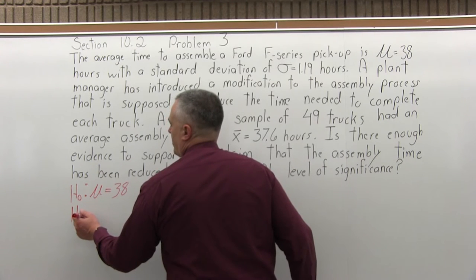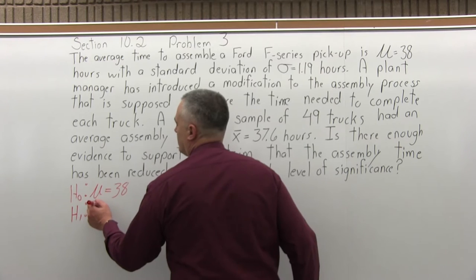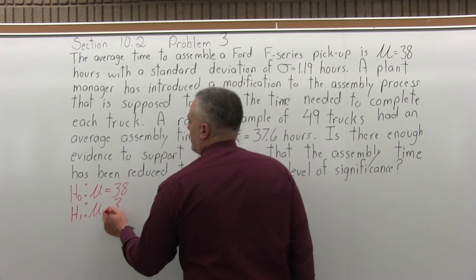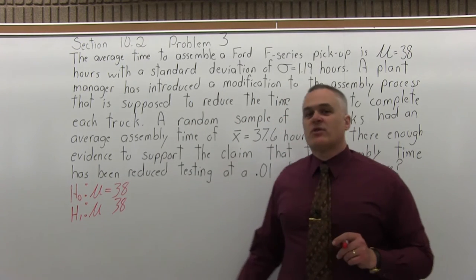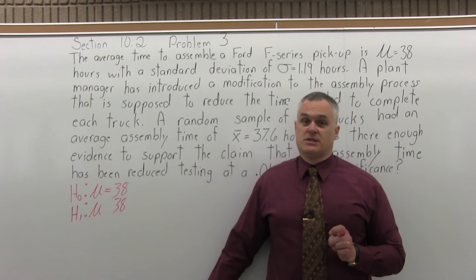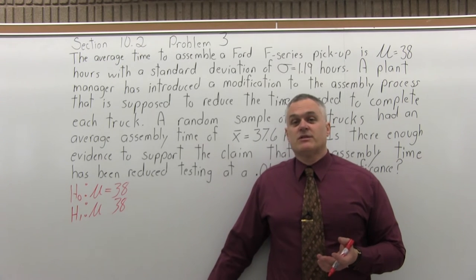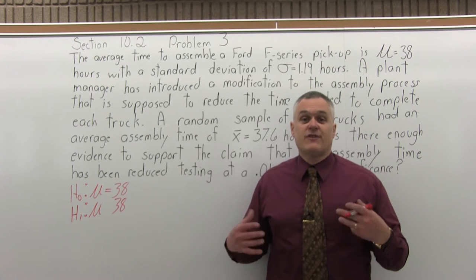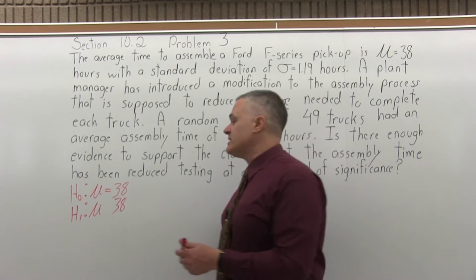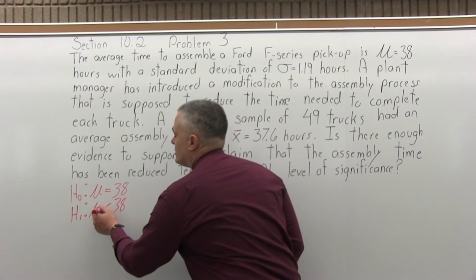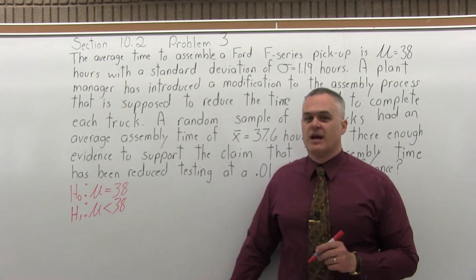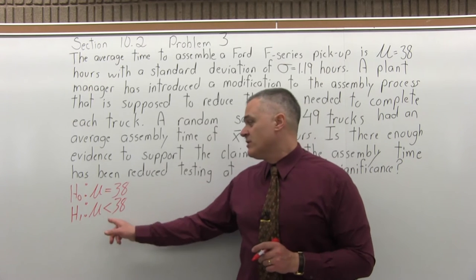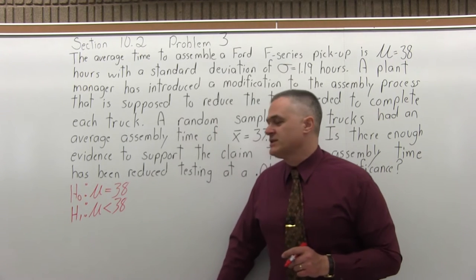Step two: state the alternate hypothesis. Capital H subscript 1 — some books use a subscript A. You're going to have the same number, so it stays 38, but you will either have a greater than symbol, less than symbol, or not equal to symbol. In this case, we want to test to see if the average has become smaller than 38 — if they can assemble the trucks faster in less time. So I'm going to use less than. No equal to, because the equal to only exists in the null hypothesis. Alternate hypothesis: mu is less than 38.